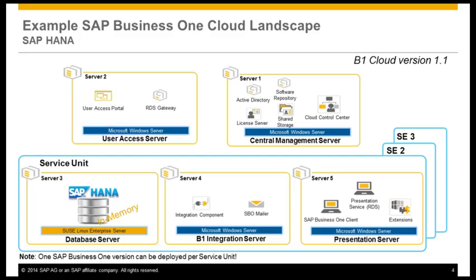In this second example, you can see the system landscape setup provided on SAP HANA technology. The landscape components like the central management and the user access server are the same as described in the landscape before, as well as the service unit administration. The only difference is that database instances for SAP HANA are based on the SUSE Linux operating system. Optionally, an integration server is needed to run additional SAP Business One components such as the SPO mailer and the integration components. To run the SAP HANA components, the same prerequisites are required as to run the SAP Business One version for SAP HANA on-premise.